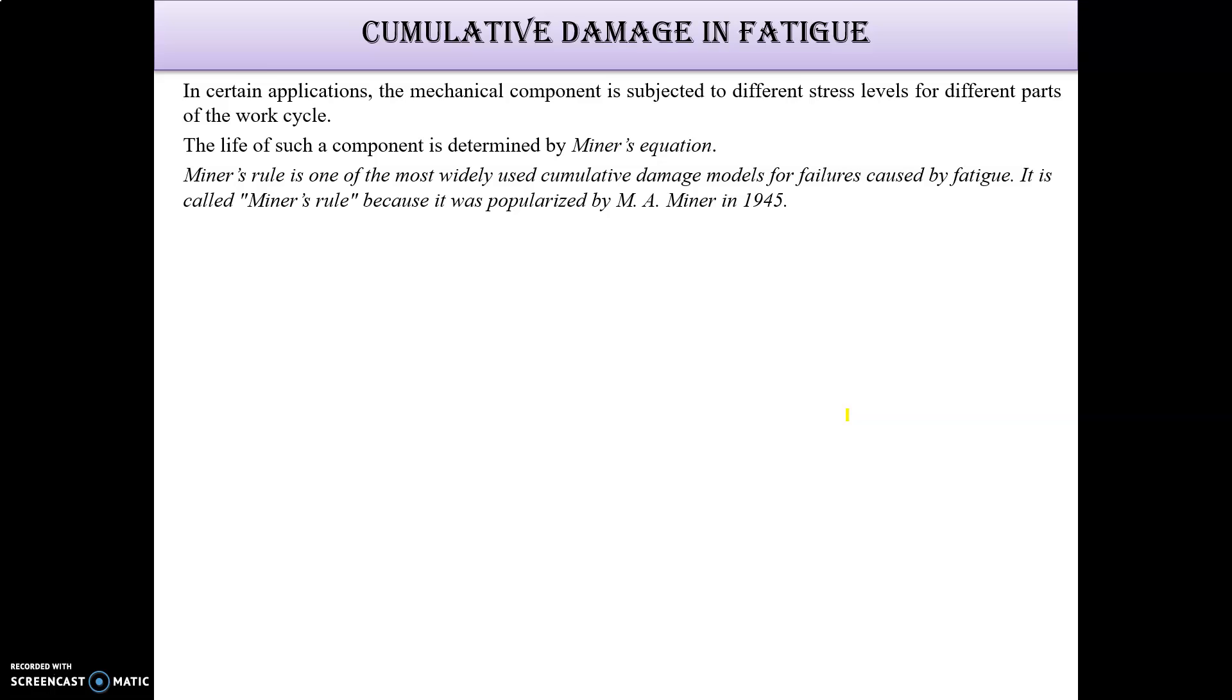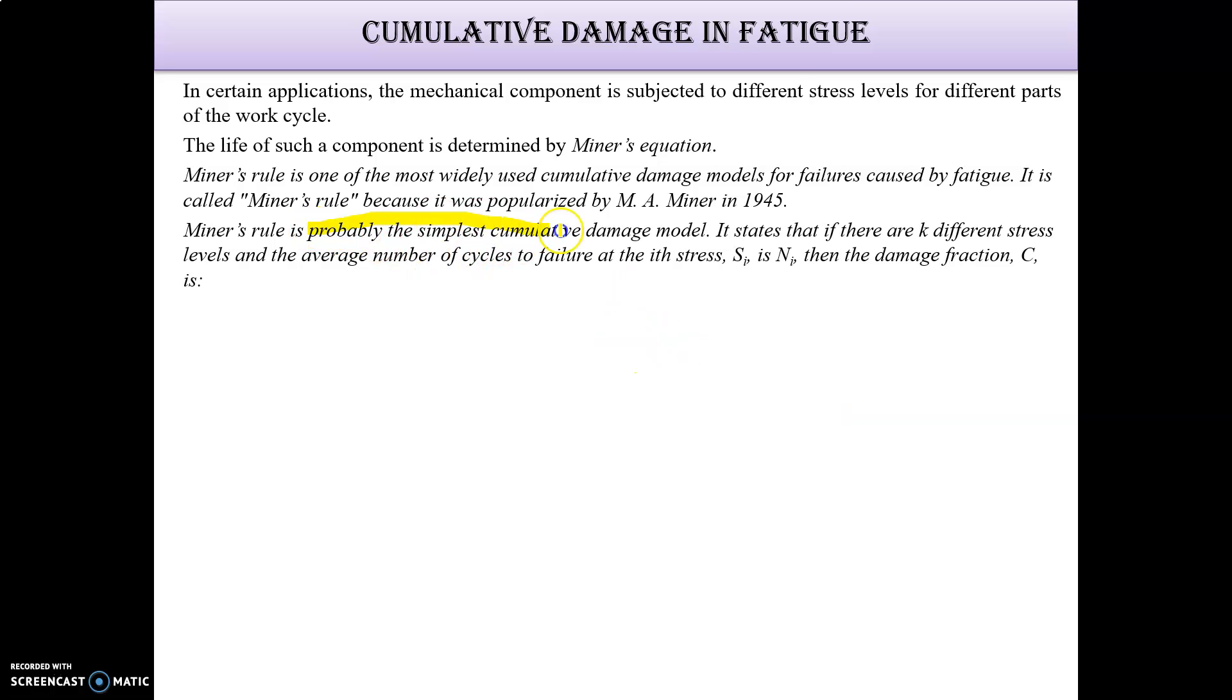What does Miner suggest? It is probably the simplest cumulative damage model. It states that if there are k different stress levels and the average number of cycles to failure at the ith stress Si is Ni, then the damage fraction C can be determined. Based on this principle, we are going to find out the cumulative damage.